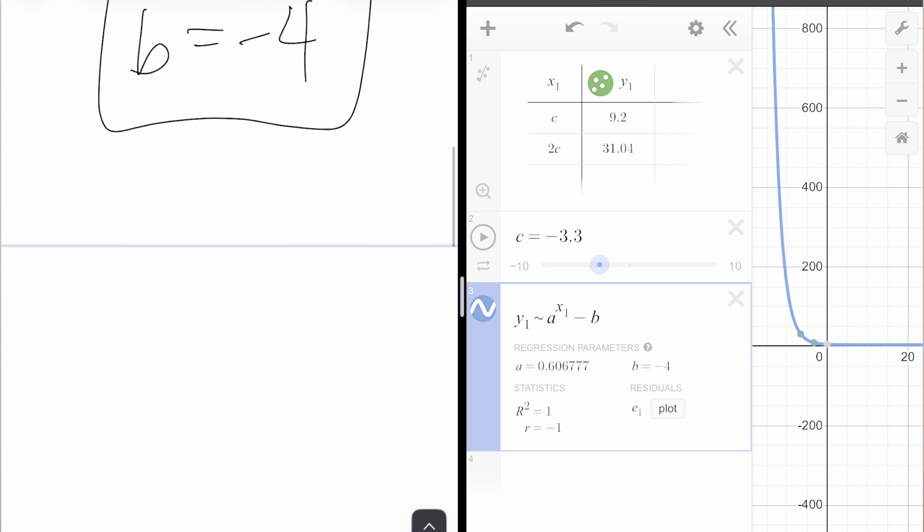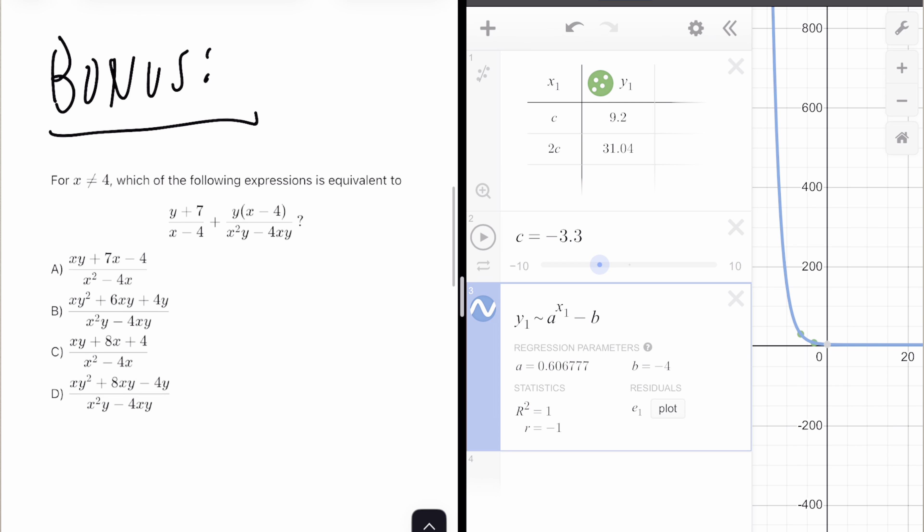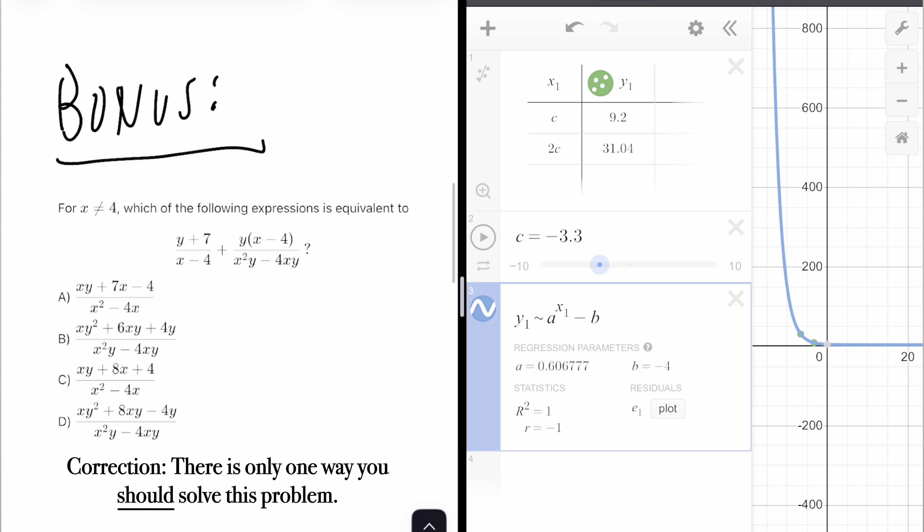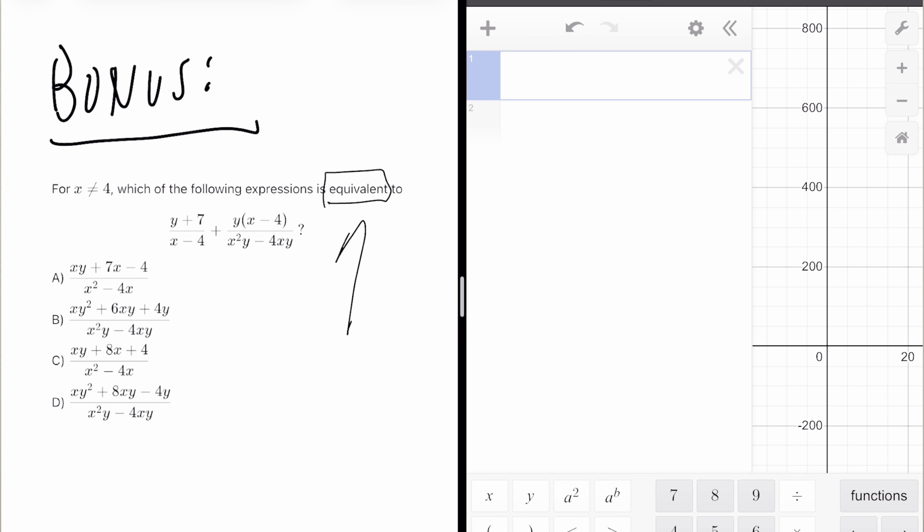All right, one more bonus question. This is not about regression. But there's only one way to solve this problem. And it's on Desmos. So since this is a Desmos video, I thought I'd include it in here. I call these questions equivalence questions, because they always give you a function. And they always give you four other functions to determine which one of these four are equivalent to the answer choice. Now the problem is, is that some of these are not even fully simplified.